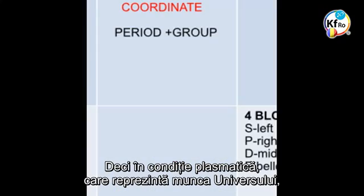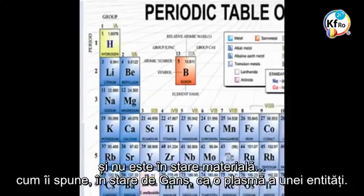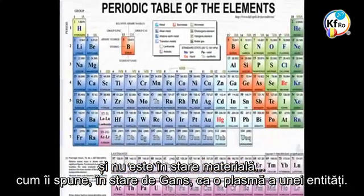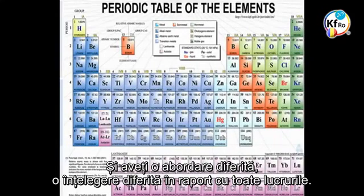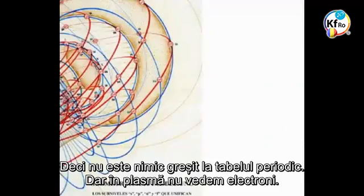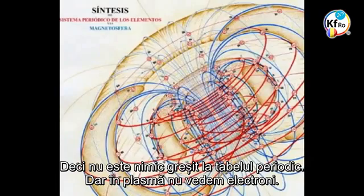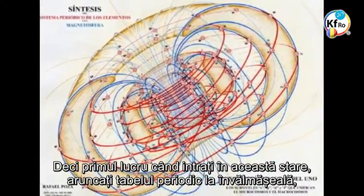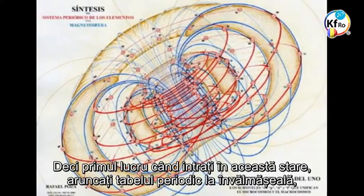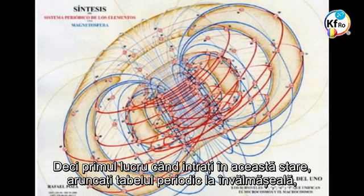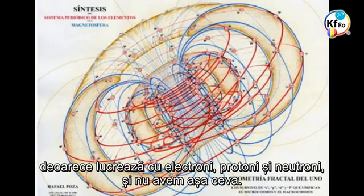In a plasmatic condition, which is the work of the universe and is not in a matter state — what we call a GANS state, as a plasma of an entity — you have a different approach, a different understanding in respect to the whole thing. There is nothing wrong with the periodic table, but in a plasma we don't see an electron. So the first thing when you go into that state throws the whole periodic table into turmoil, because it works for a number of electrons, protons, and neutrons, and we don't have that.